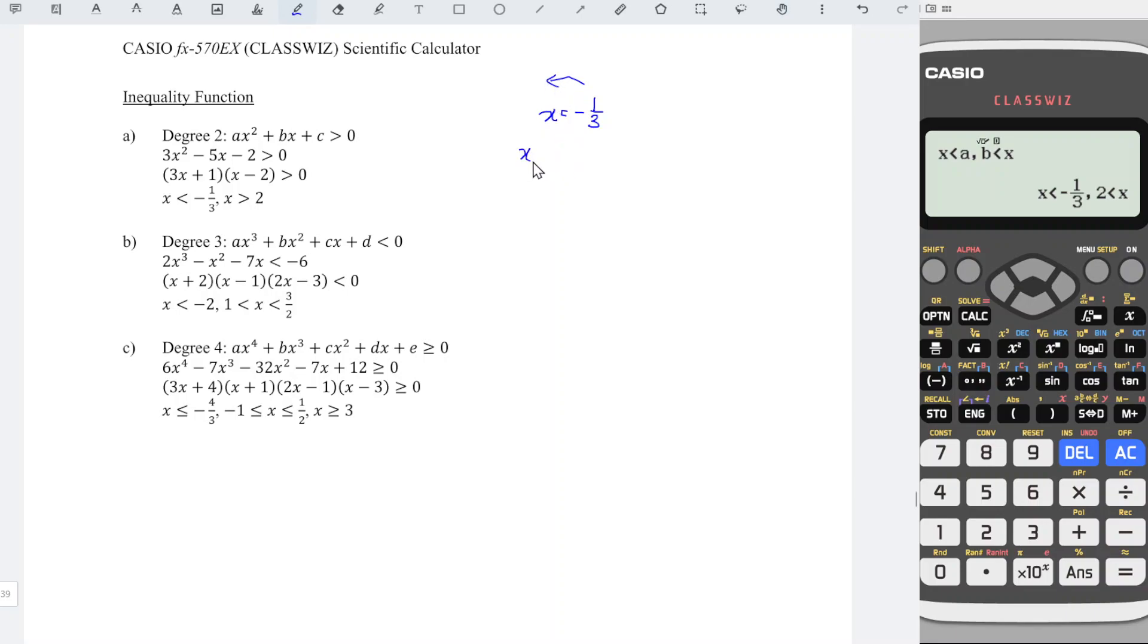Which means that we should have x plus 1/3 equals zero. If we don't want the fractional number, we just have to times the entire equation by 3 and we should obtain 3x + 1 = 0. We just have to bring this factor as our step.